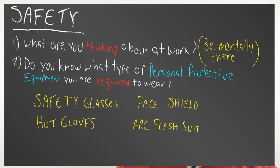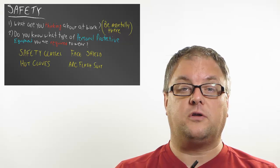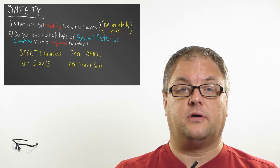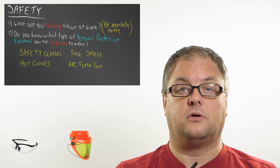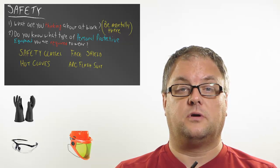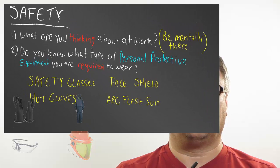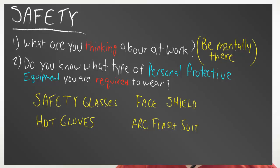The other thing that Jimmy could have done was make sure he was wearing his personal protective equipment. We're going to call that PPE for short. What he could have been wearing was safety glasses, a face shield, hot gloves, and maybe an arc flash suit. The NFPA 70E manual goes into what we need to wear when we're working on live equipment. That is something you can start checking out.